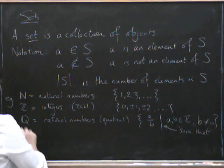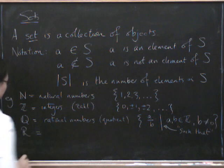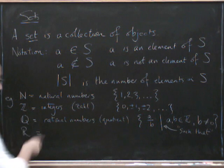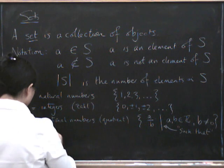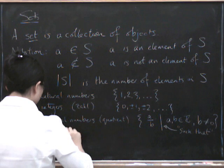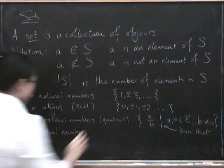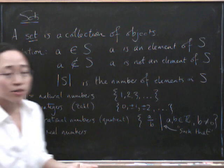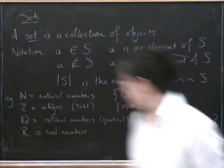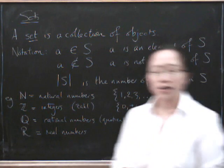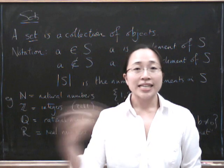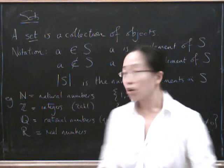We've also got the set blackboard bold R. That's why we couldn't call the rational numbers R. And that's the real numbers. So that includes the irrational numbers as well. Things that can't be written as fractions in this way. Like the square root of 2, e, pi, lots of other things.